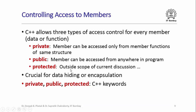Now it turns out that in C++ there are actually ways to control access for every member, whether it is a data member or a member function of an object. The way we do this in C++ is using three keywords: private, public and protected. When we say a member is private it means it can be accessed only from member functions of the same structure. When we say a member is public it means that member can be accessed from anywhere in a program. The protected keyword denotes a type of access control outside the scope of the current discussion.